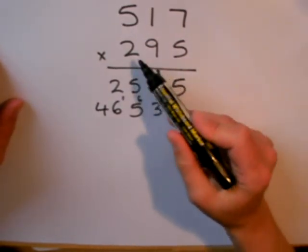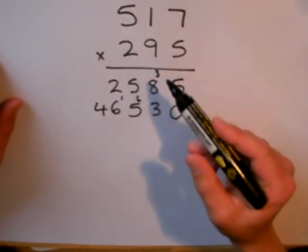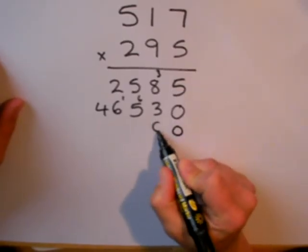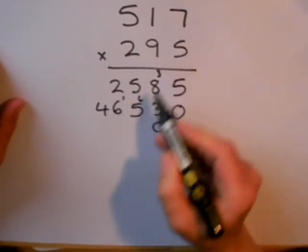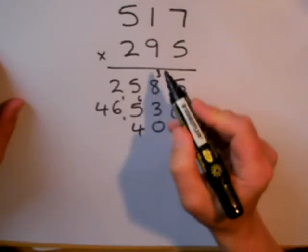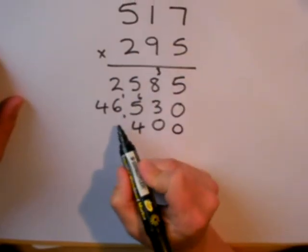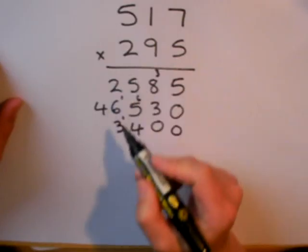Before I start multiplying by the 2, because it's 200, I must remember to put two 0s down. Two sevens are 14. Two ones are 2, plus the one to carry is 3. And finally, two fives are 10.